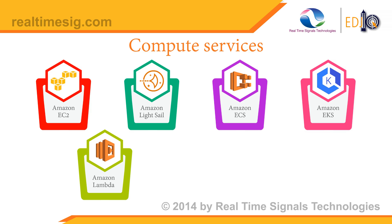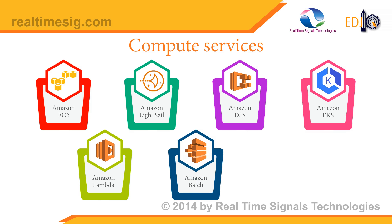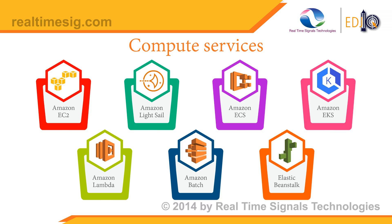The sixth service is AWS Batch, which enables developers, scientists, and engineers to easily and efficiently run hundreds of thousands of batch computing jobs on AWS. The last service is Elastic Beanstalk — an easy-to-use service for deploying and scaling web applications deployed with Java, .NET, PHP, Node.JS, Python, etc. You can simply upload your code and Elastic Beanstalk automatically handles the deployment.